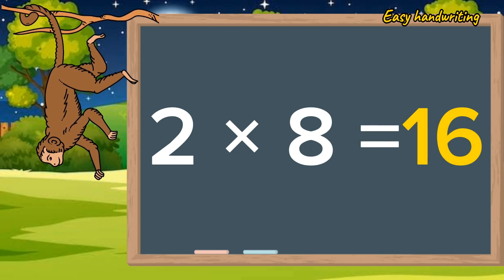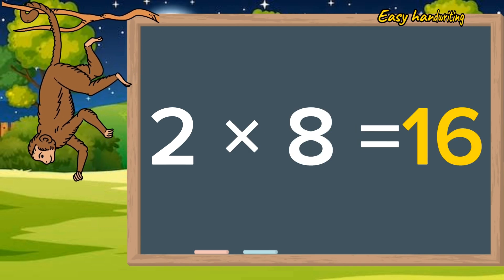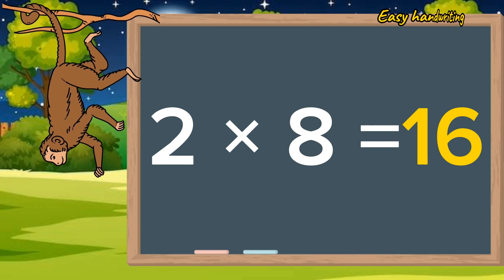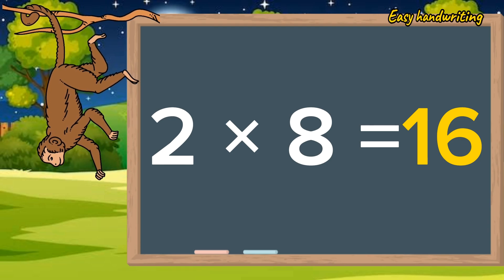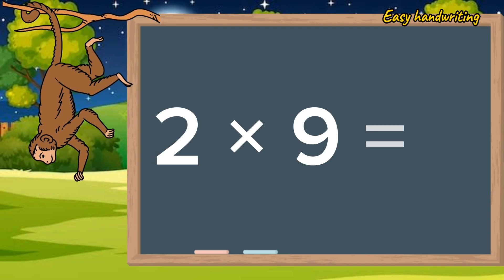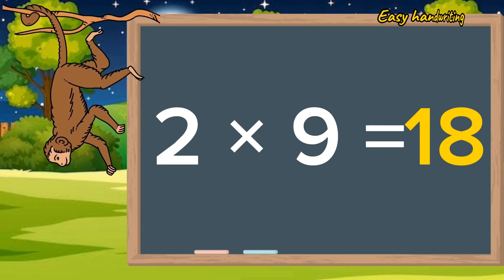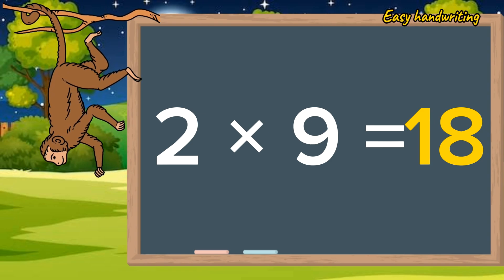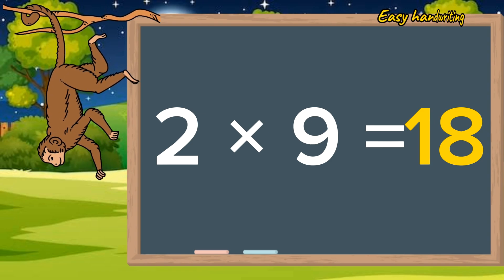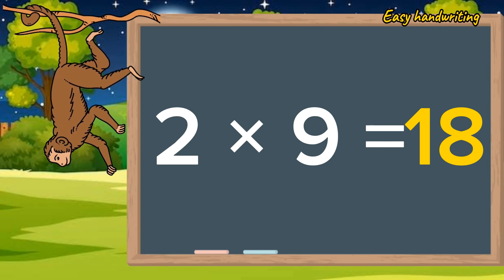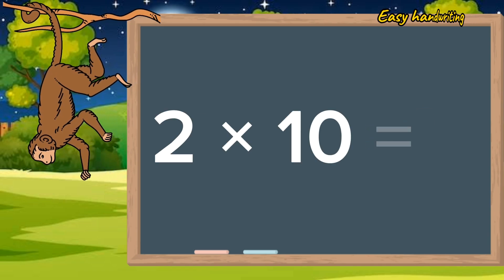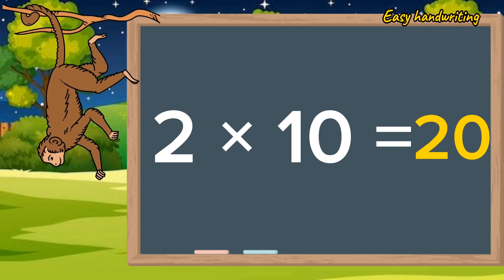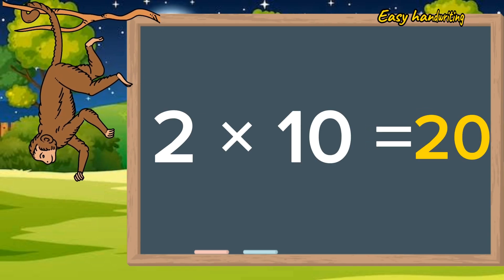Two eights are sixteen. Two nines are eighteen. Two tens are twenty.